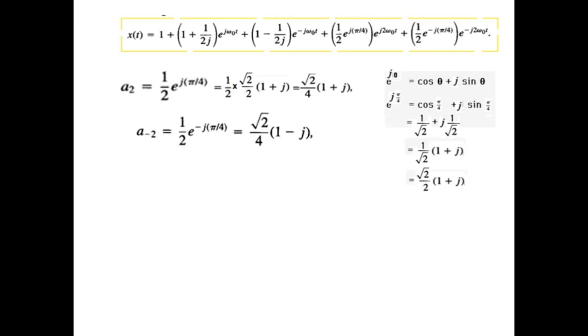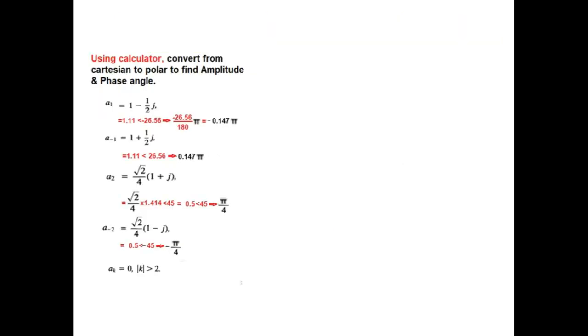Similarly, we can write for A minus 2. It will be under root 2 over 4, 1 minus j. And for all other values of k greater than 2, the value of the amplitude will be 0 because there is no signal present there.